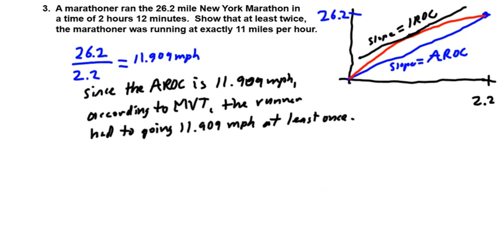Now for the second part, we need to demonstrate that the runner was traveling at exactly 11 miles per hour at least twice. For that we're going to make another graph. On the independent variable axis we're going to have 2.2 hours again, but this time on the vertical axis we're going to have speed. We know according to the Mean Value Theorem that there was a time in this race between 0 and 2.2 hours, represented by this point right up here, where the runner was traveling at exactly 11.909 miles per hour.